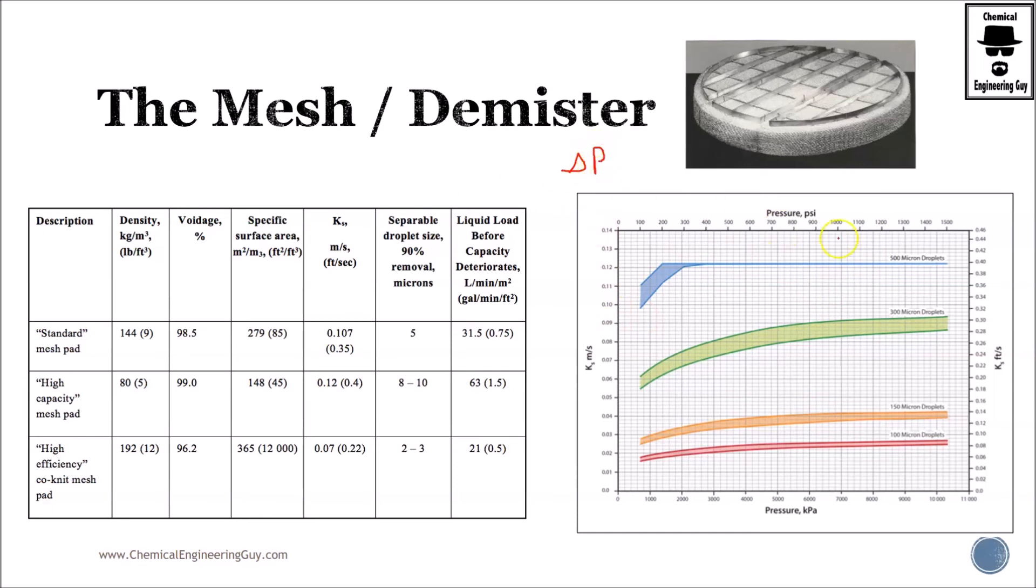They will depend on pressure drops that you may allow, the velocities you are operating at, and the droplet sizing—what amount will you allow. Lower droplets mean higher pressure, and higher velocities mean more pressure drops.